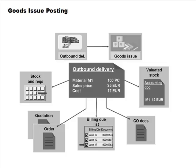Once you've packed and loaded, you post goods issue. Up until that point, all the material is still considered as being in our stock. At the point of goods issue posting, you say it's going off to the customer — our inventory has gone down. An outbound delivery has finally resulted in a goods issue posting.